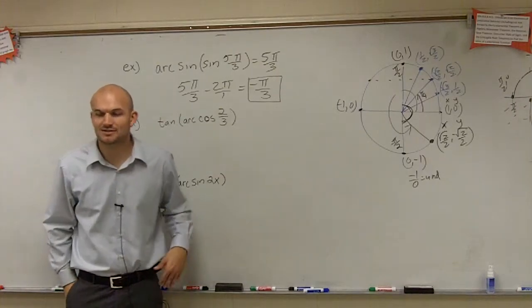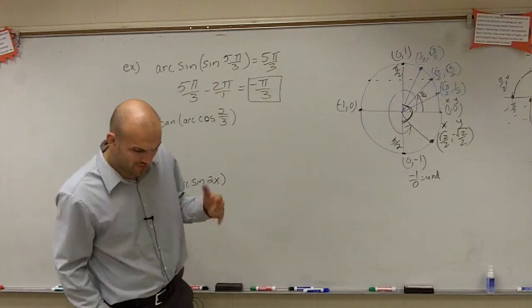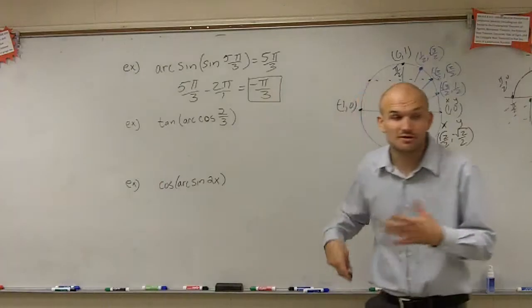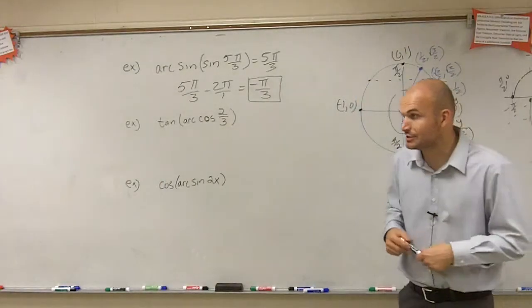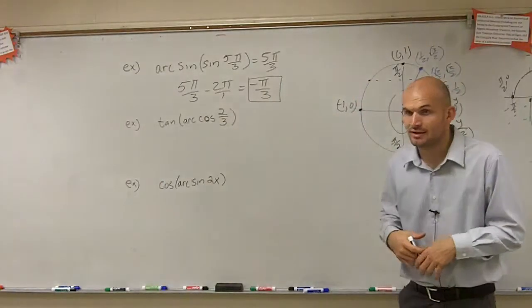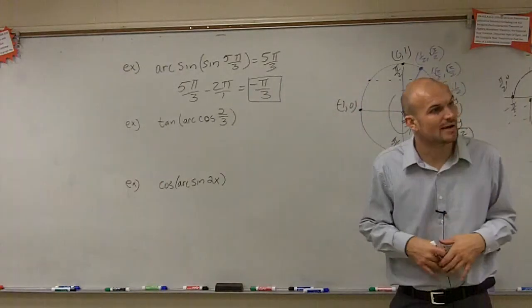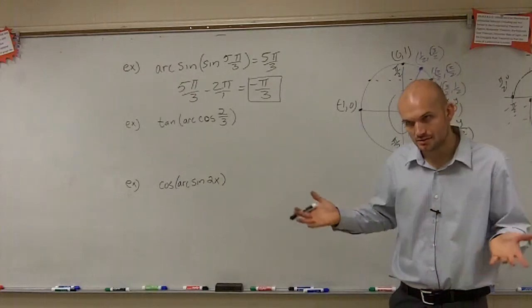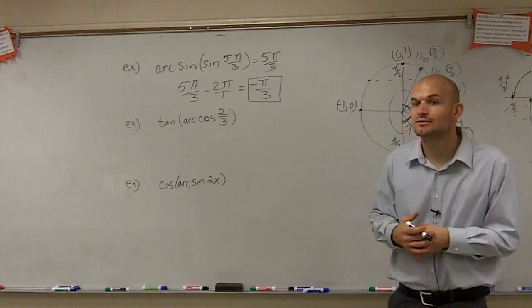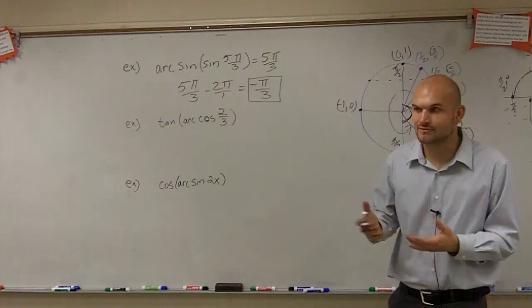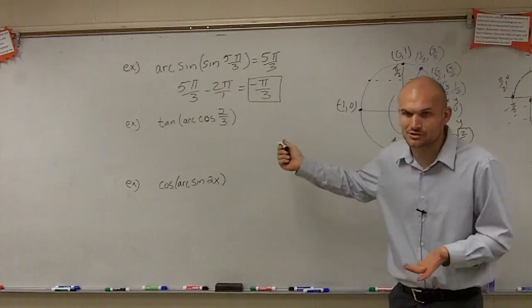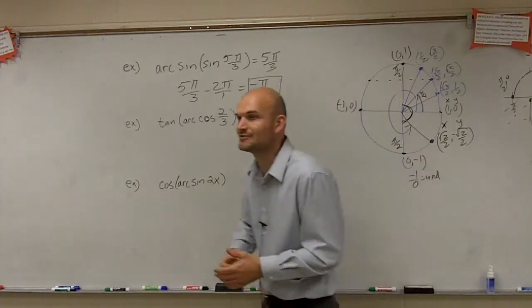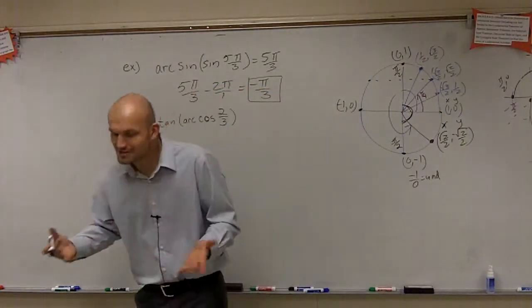It goes back to what I've said over and over again. If you don't have a point that's on the unit circle, the next best thing you have to do is — creating a unit circle is not going to help us. You're going to have to create a triangle.